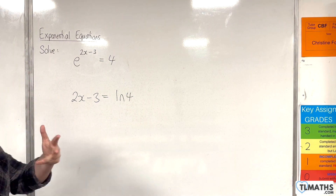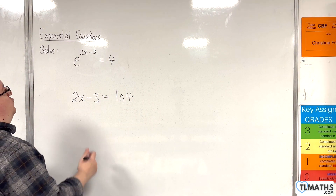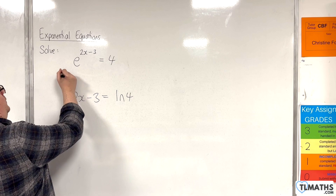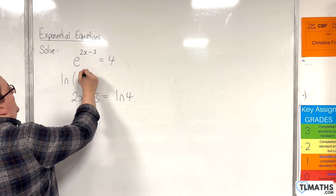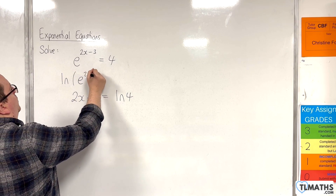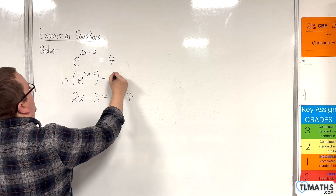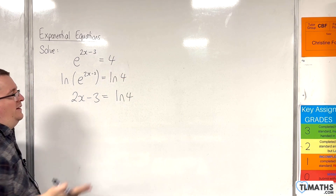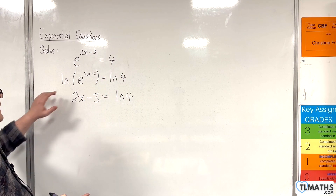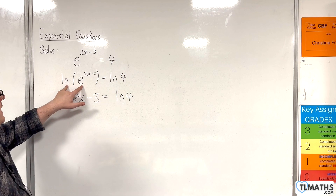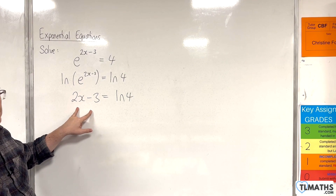Essentially we are logging both sides with the natural log. So there is a step here of ln of e to the 2x take away 3 is equal to ln of 4, which I don't need to bother writing down. And ln of e to the 2x take away 3 is just the 2x take away 3.